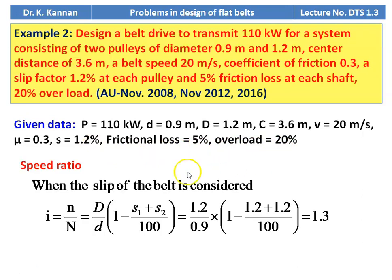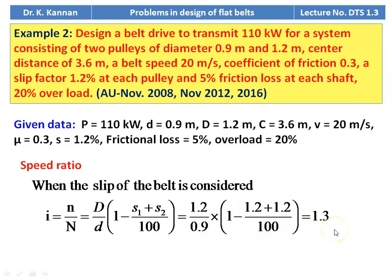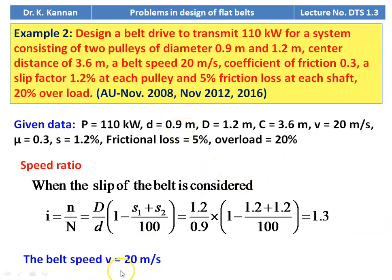Given data: power = 110 kilowatt; smaller pulley diameter = 0.9 m; larger pulley diameter = 1.2 m; center distance = 3.6 m; belt speed = 20 m/s; coefficient of friction = 0.3; slip factor = 1.2 percent; friction loss = 5 percent; overload factor = 20 percent. Speed ratio considering slip: i = (D / d) × [1 − (s₁ + s₂) / 100] = (1.2 / 0.9) × (1 − 2.4 / 100) = 1.3. Belt speed V = 20 meters per second.